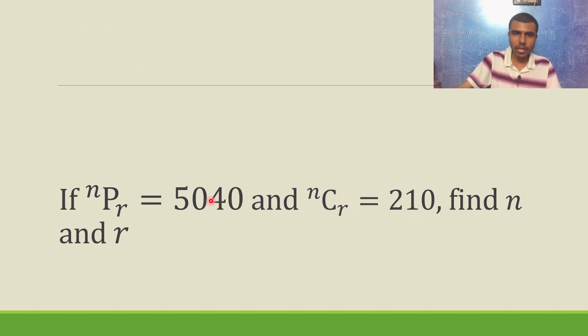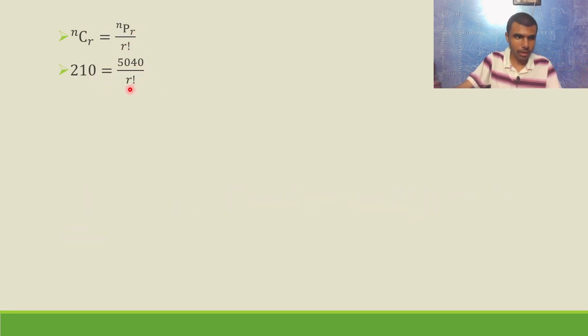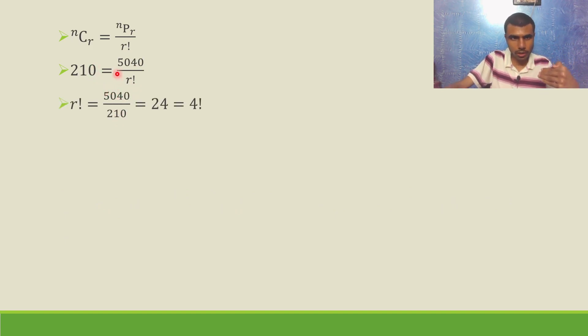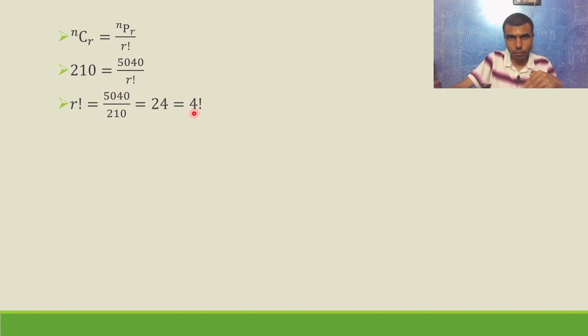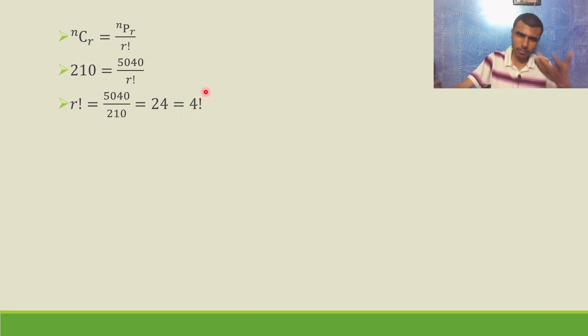nCr is 210, nPr is 5040. Substituting: 210 = 5040 / r!. So r! = 5040 / 210 = 24. And 24 is nothing but 4 factorial — 4×3×2×1. So r factorial is 4 factorial, therefore r is 4.